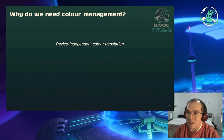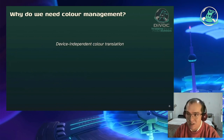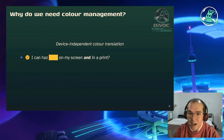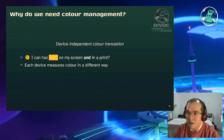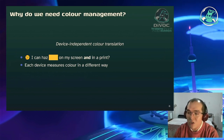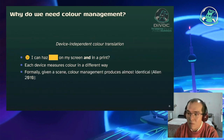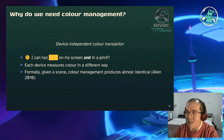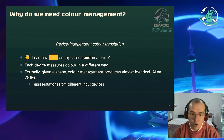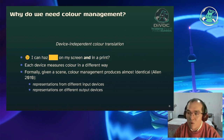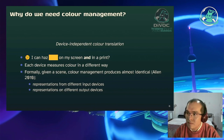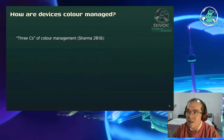Warum brauchen wir Farbmanagement? Es geht meistens um geräteunabhängige Übersetzung von Farben. Wie kann ich sicherstellen, dass die Farbe auf meinem Bildschirm auf deinem Bildschirm auch so aussieht – oder auf dem Papier? Das ist wichtig, weil jedes Gerät andere Bildschirme hat. Deswegen ist diese Verwaltung wichtig, um die verschiedenen Geräte zu repräsentieren – sowohl Eingabegeräte wie Kameras als auch Ausgabegeräte wie Bildschirme.